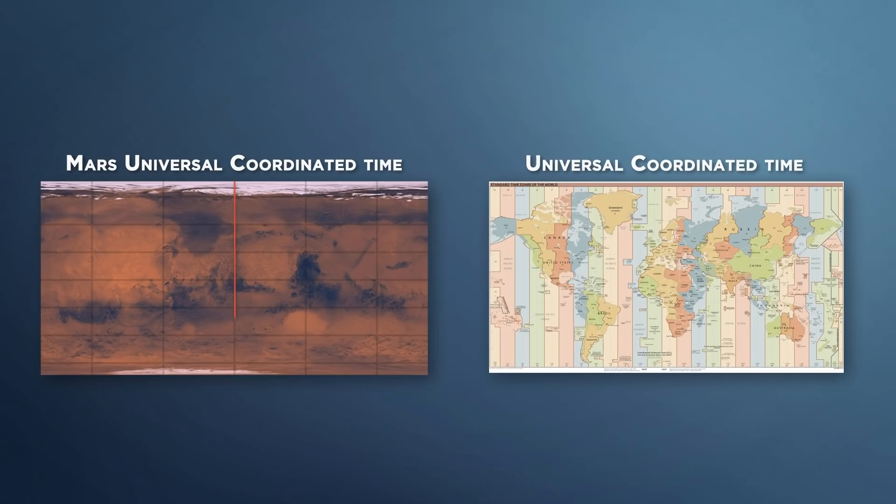MUCT is very similar in nature to how Universal Coordinated Time, or UTC, works on Earth. It is defined as the mean solar time at Mars' prime meridian. Much like how Earth has a prime meridian marking for which Universal Coordinated Time is based off of, Mars has a meridian that was first proposed way back in 1830, to be exact, and is marked by a crater known as Airy-0.